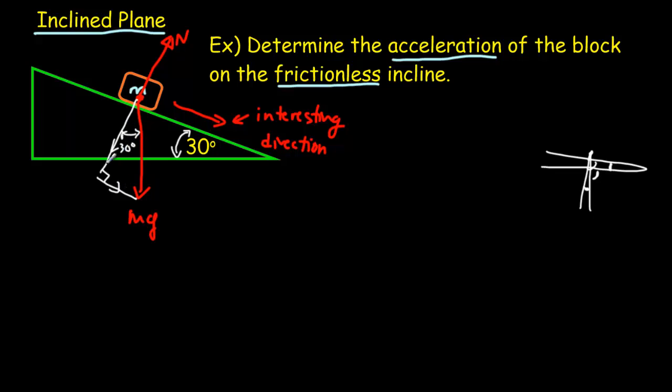And that means we can actually write what these components are. This component here, that's opposite. It's an opposite side, so it will involve the sine of 30 degrees. Multiplied by the hypotenuse, that hypotenuse will be mg. So we end up with this component, mg sin theta. This is the adjacent side, so that will be mg cos theta.